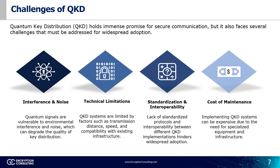The final hurdle to adoption is the cost of maintenance. Setting up and maintaining QKD systems can be expensive. Specialized equipment, skilled personnel, and ongoing maintenance costs can be significant hurdles for some potential users, limiting the accessibility of QKD for a wider range of organizations. However, efforts are currently underway to develop more cost-effective QKD solutions, including advancements in manufacturing techniques and the use of readily available components. Addressing all of these challenges will be vital for realizing the full potential of QKD, with collaboration between researchers, industry stakeholders, and policymakers essential in advancing the field.